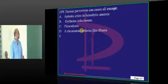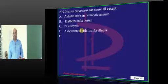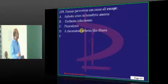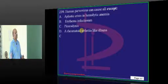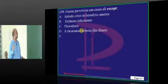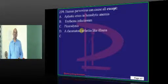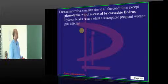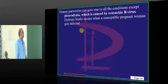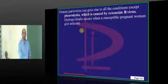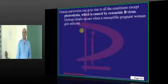Human parvovirus can lead to erythema infectiosum and a rheumatoid arthritis-like illness, but not pleurodynia. Pleurodynia is caused by Coxsackievirus — specifically Coxsackievirus B — which is what you need to remember.